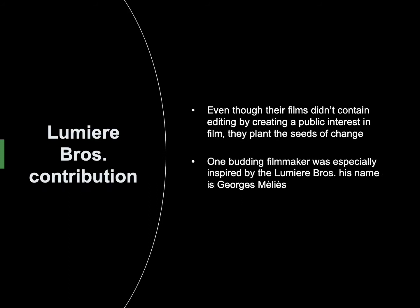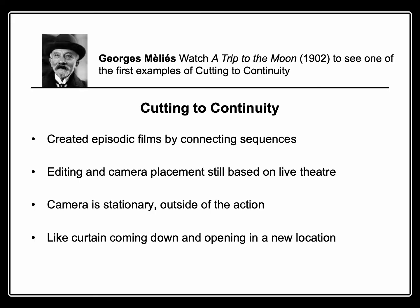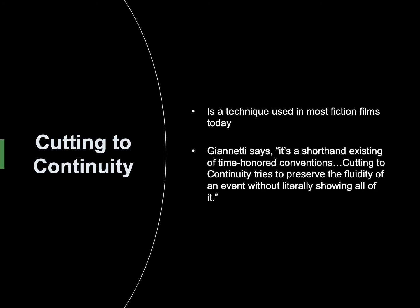Even though the Lumière brothers' films didn't contain editing, by creating public interest in film they planted the seeds of change. One budding filmmaker especially inspired by them was Georges Méliès. Watch A Trip to the Moon to see one of the first examples of cutting to continuity. Méliès used cutting to continuity to create episodic films by connecting sequences, though editing and camera placement were still based on live theater — the camera was stationary and outside of the action. Cutting to continuity is like a curtain coming down and then opening in a new location, and it's a technique used in most fiction films today. Gianetti describes it as a shorthand consisting of time-honored conventions that tries to preserve the fluidity of an event without literally showing all of it.